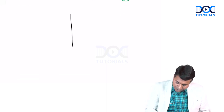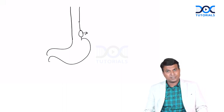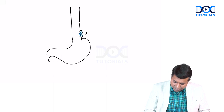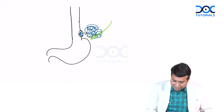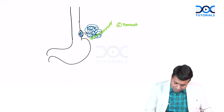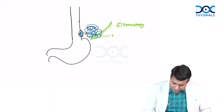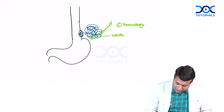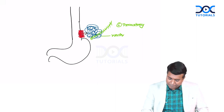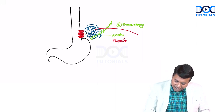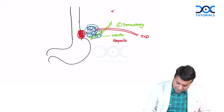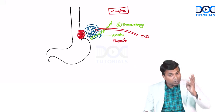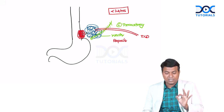For Boerhaave syndrome management within 24 hours: there is a tear in the lower end of esophagus, and all food particles enter the chest causing mediastinitis on the left side. I will perform a left thoracotomy, give lavage of the left chest cavity, identify the rent, repair it, and keep an intercostal drain (ICD) inside the chest. This procedure — thoracotomy, lavage, repair, and ICD — is done when the tissue is healthy within 24 hours.